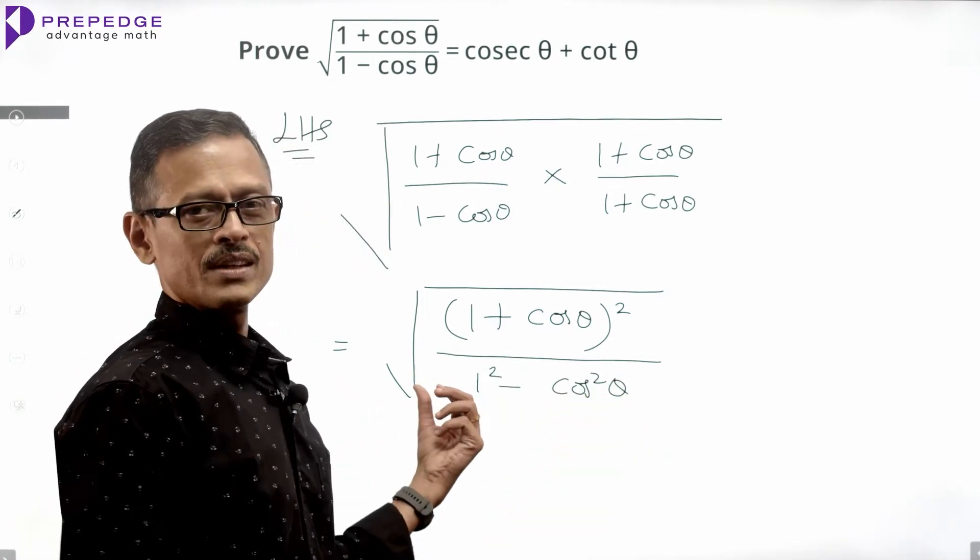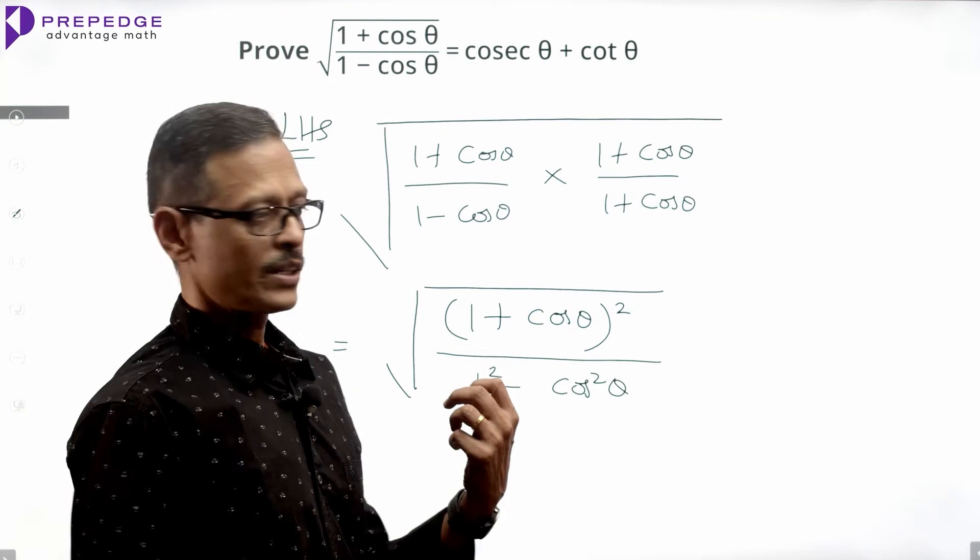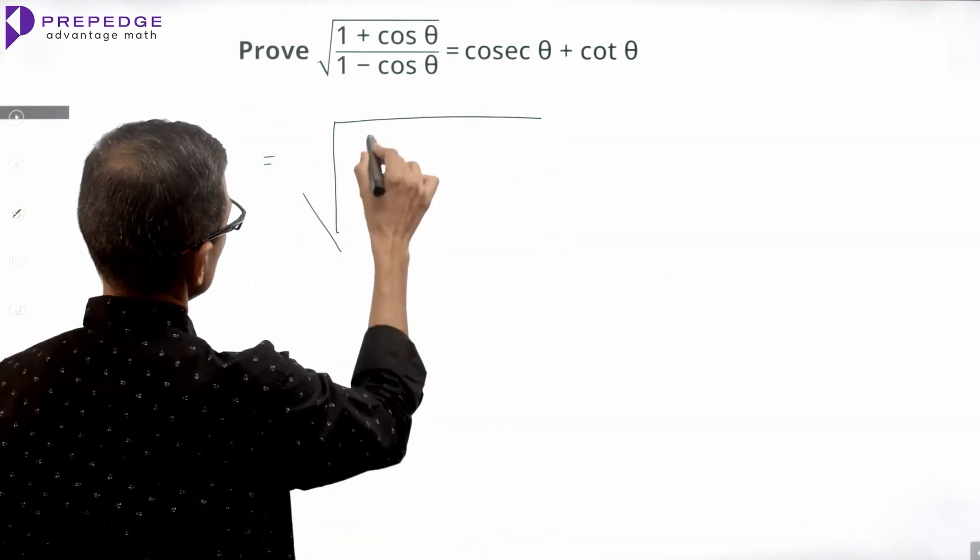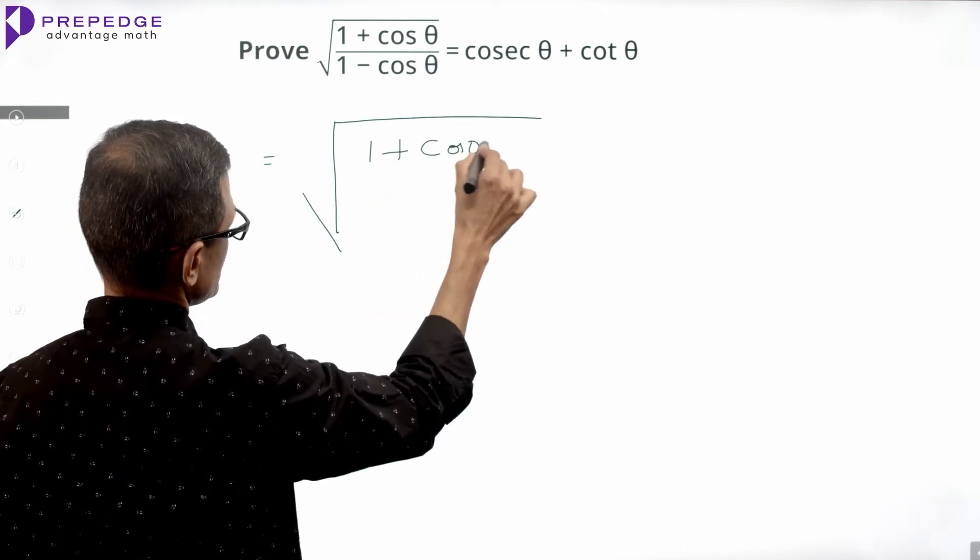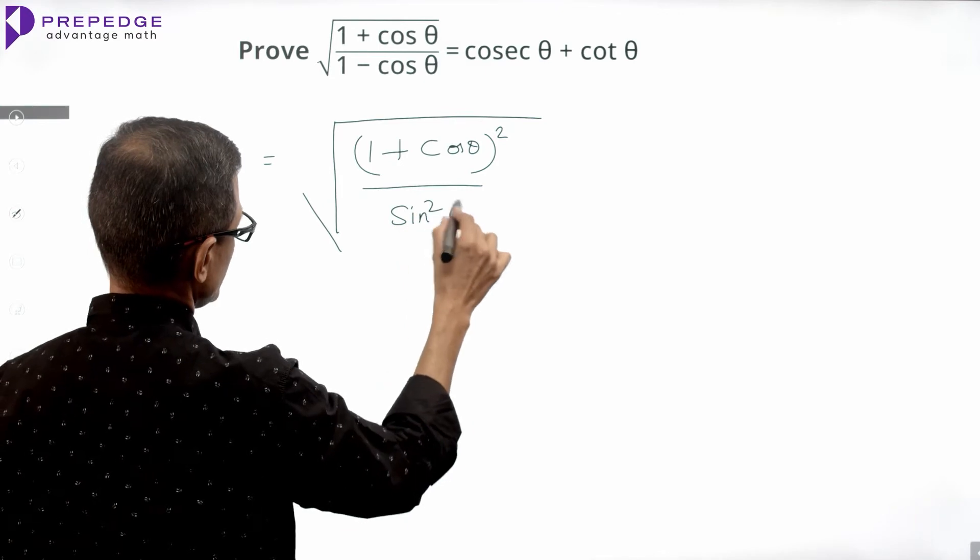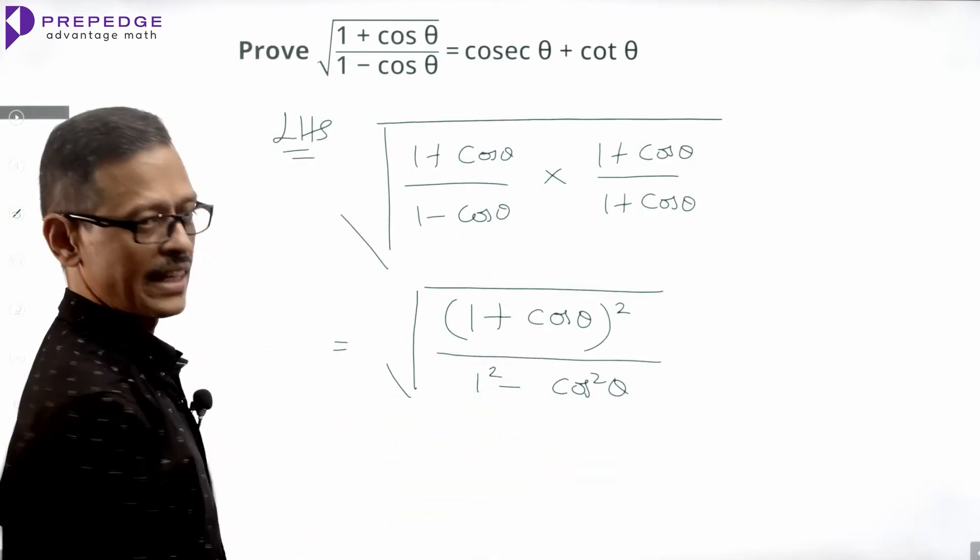1 square is 1. 1 minus cos square theta equals sin square theta. So this is equal to square root of 1 plus cos theta whole square divided by sin square theta. 1 minus cos square theta equals sin square theta.